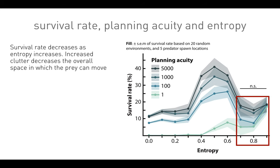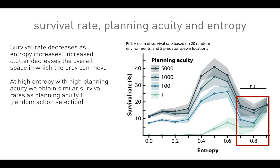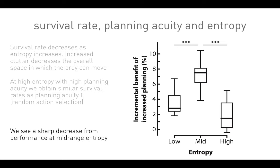Survival rate decreases as entropy increases further, and increased clutter decreases the overall space in which the prey can move. At high entropy — 0.9 — even at 5,000 planning acuity, the strategy of planning only one step ahead, which is essentially random behavior, matches the success rate at 5,000 steps. Planning gives you no benefit essentially. We should see a sharp decrease from performance at mid-range entropy when looking at the incremental benefit of planning.